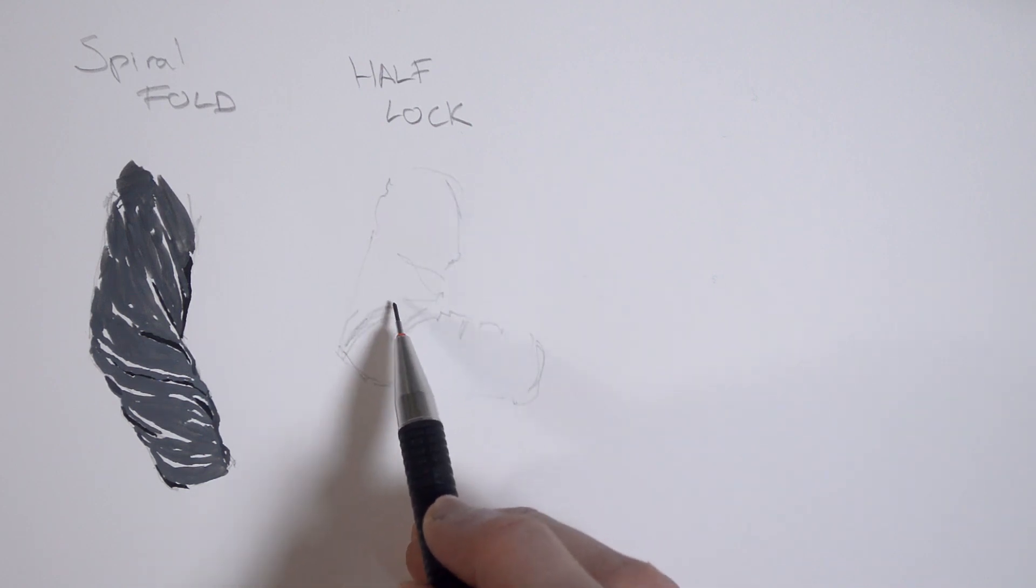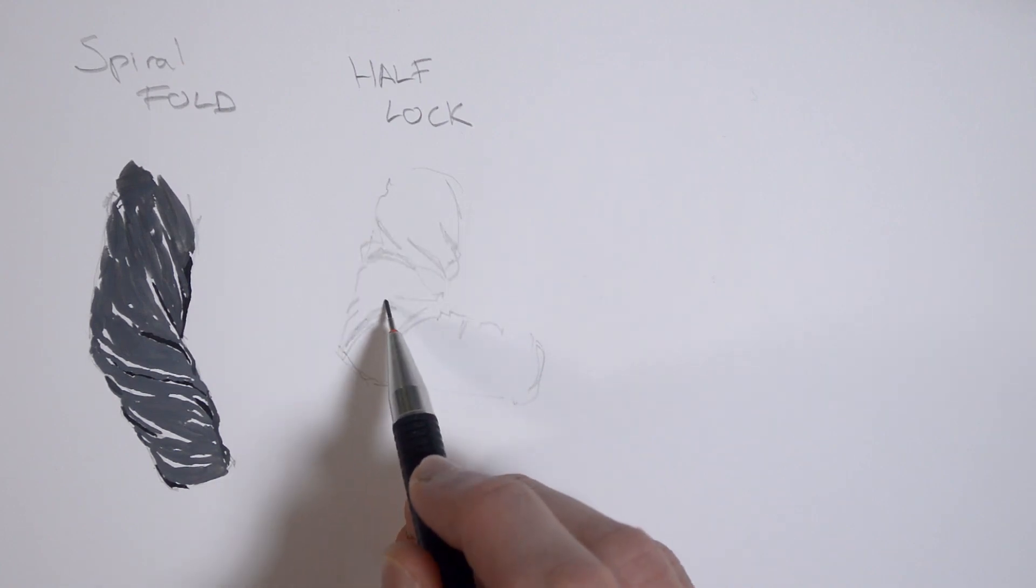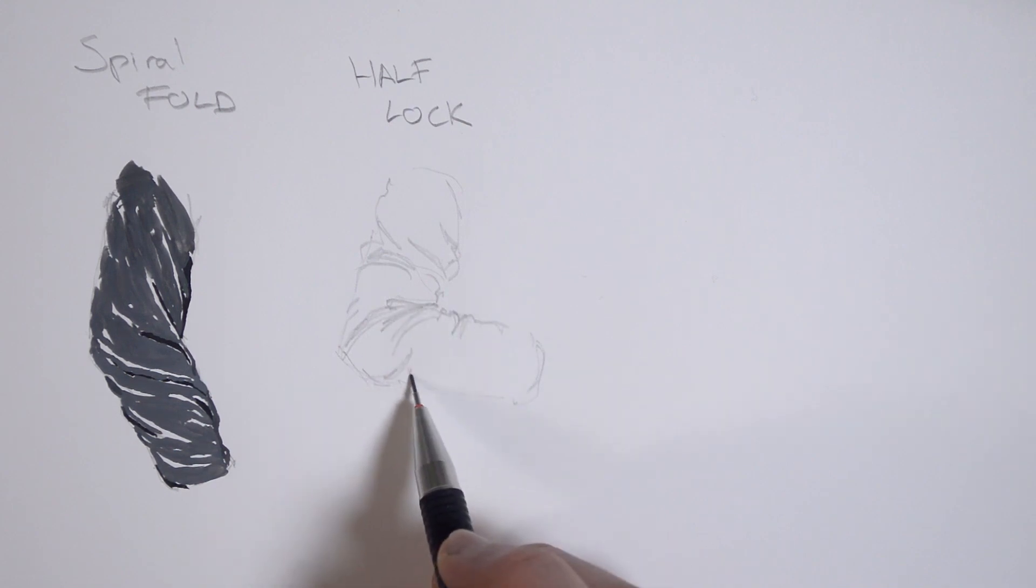Number 5. The Half Lock. This fold is created at a pinch point, like an elbow. Its defining quality is that it radiates out from the pinch point in a series of tiny folds. You'll also see in this example that there are some spiral folds and zigzag folds as well.